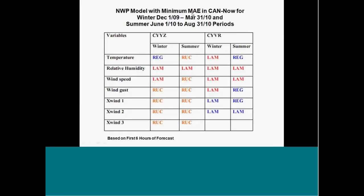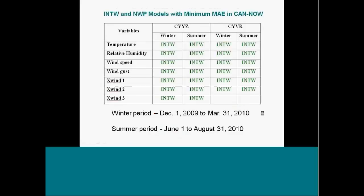This just shows you the NWP model with the minimum mean absolute error in CAN-Now for the winter and the summer periods for Pearson and Vancouver. Let's just look at Pearson. You can see that in this case for temperature, for example, in the winter, the regional model produced the best minimum absolute error, whereas in the summertime the RUC model did. The takeaway message from this is that different models do better at different locations and for different parameters. And that's one of the values of the INTW system because it basically checks the accuracy of all the different models and produces a forecast. And INTW, for the same kind of comparison, produced the best forecast for all of these variables.